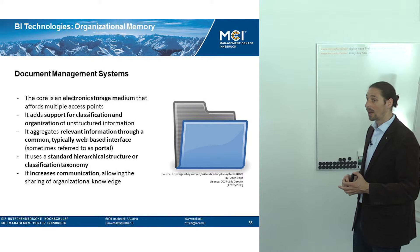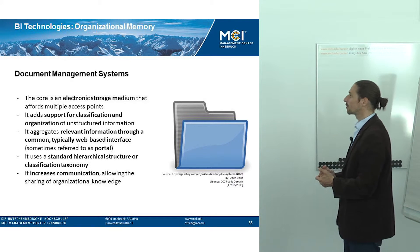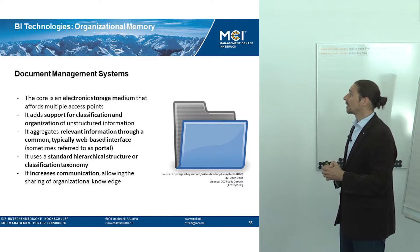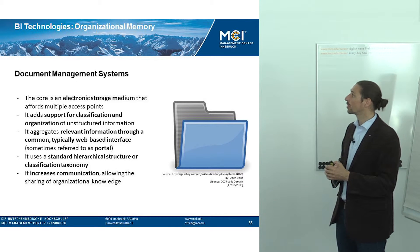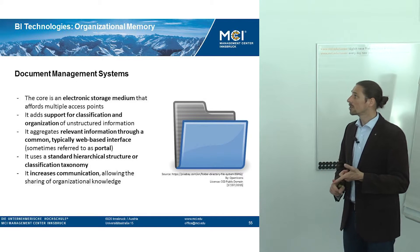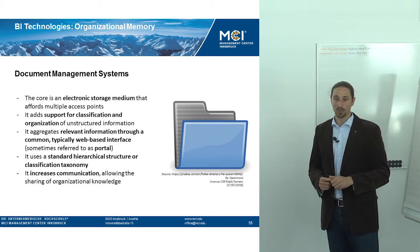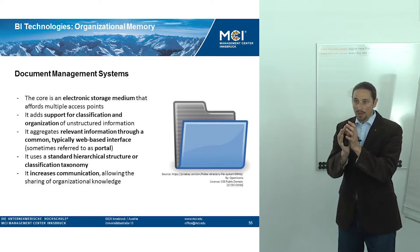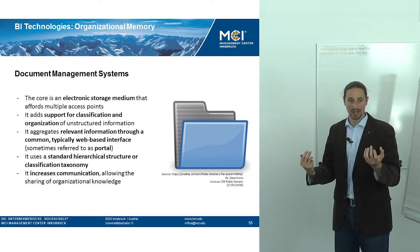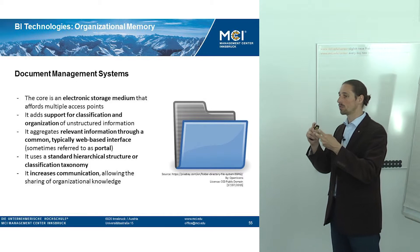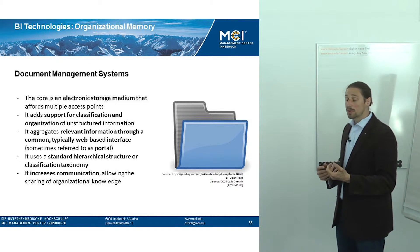One example you probably know as a knowledge repository is a document management system. The core is usually an electronic storage medium, typically online, that affords multiple access through databases, web applications, browsers, or installed systems on your computer. It adds support for classification and organization of unstructured information — you can put folders, links, and labels. If you think about Wikipedia, for example, it is a huge pool of unstructured text, but there are ways to structure it using keywords, folders, and links. That is a crucial aspect of document management systems or knowledge repositories.